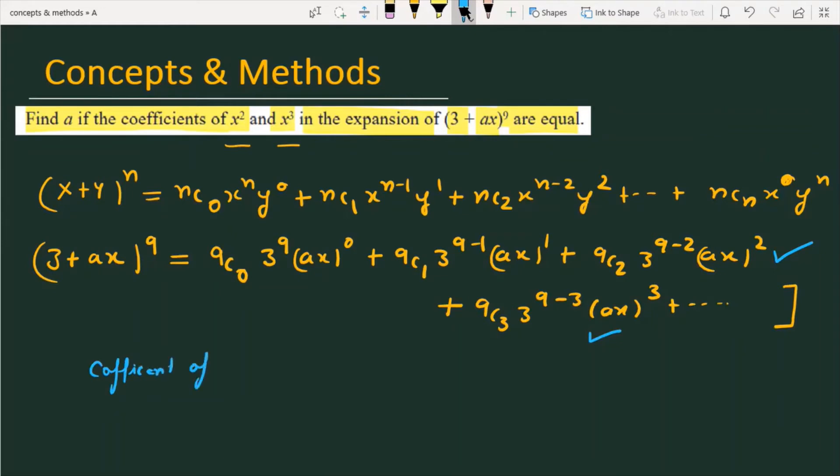The coefficient of x² is ⁹C₂ · 3⁷ · a². This is our first equation.